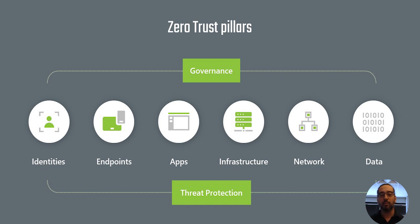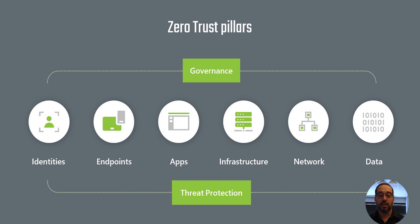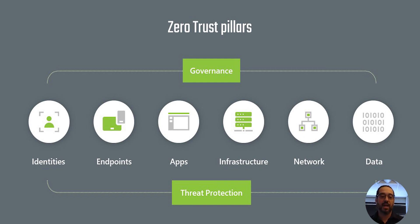Applications and APIs provide the interface through which data is consumed — whether legacy on-premise apps, cloud workloads, or modern SaaS applications. Controls need to discover what exists in those areas, ensure appropriate in-app permissions, gate access based on real-time analytics, monitor for abnormal behavior, and validate secure configurations. Infrastructure — whether on-premise, cloud, or VMs — represents a massive threat vector. Using telemetry to detect anomalies or automatically block and flag risky behavior is essential.